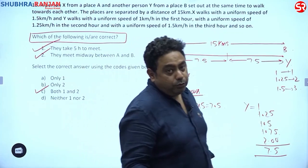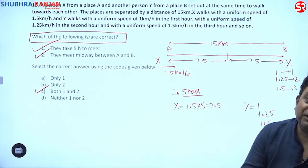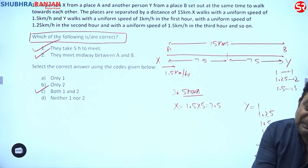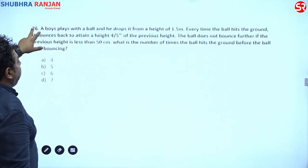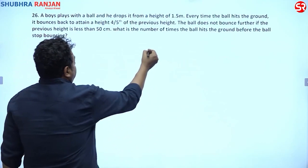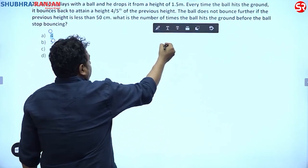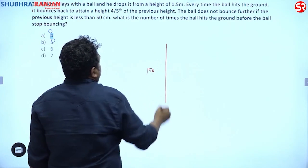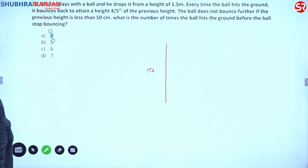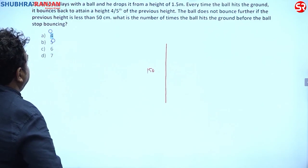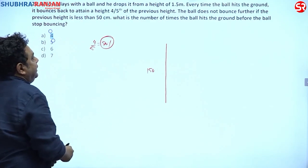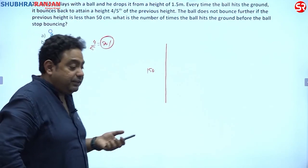Both statements are true — they take 5 hours to meet and they meet at the midpoint. This question uses speed, time, and distance but applies data sufficiency as a tool. Next problem: a boy drops a ball from a height of 1.5 meters (150 cm). Every time the ball hits the ground, it bounces to four-fifths (80%) of the previous height, and the ball stops bouncing if the previous height is less than 50 cm.